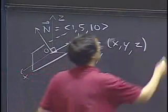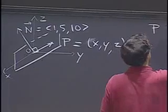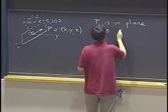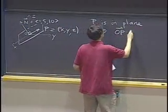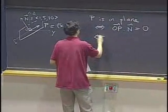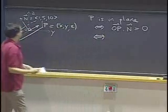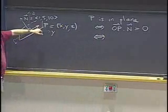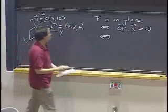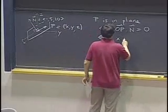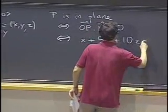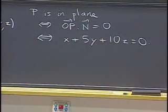So P is in the plane whenever OP dot n is zero. And if we write that explicitly, well, vector OP has components x, y, z and has components 1, 5, 10. So that will give us x plus 5y plus 10z equals zero. That's the equation of our plane.